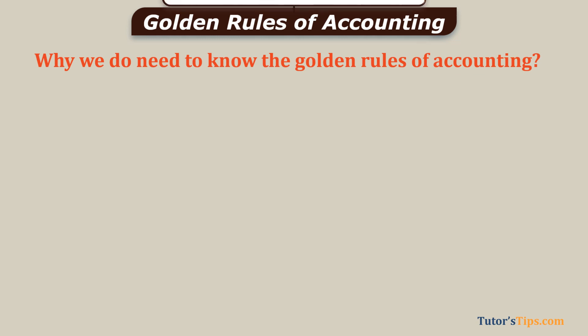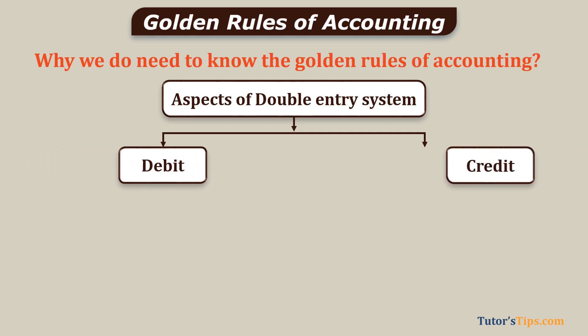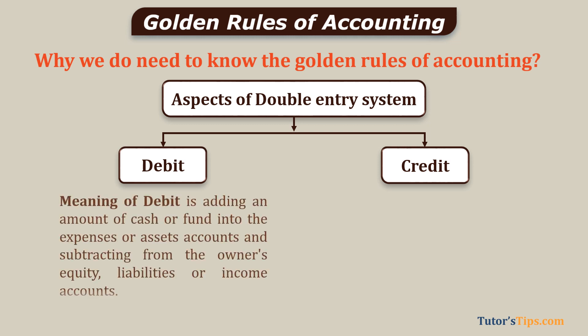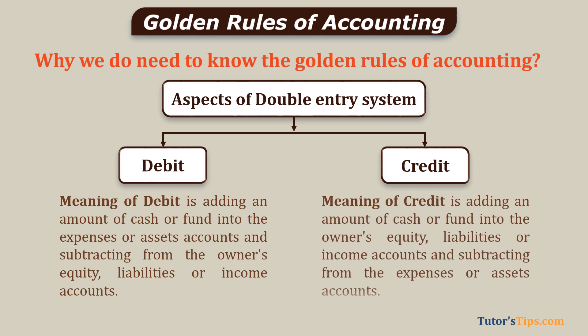The double entry system is based on two aspects: one is the debit and the other is the credit. Every business transaction always has a minimum of two accounts. The meaning of debit is adding an amount of cash or fund into the expenses or assets accounts and subtracting from the owner's equity, liabilities, or income accounts. The meaning of credit is adding an amount of cash or fund into the owner's equity, liabilities, or income accounts and subtracting from the expenses or assets accounts.